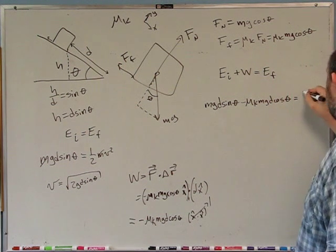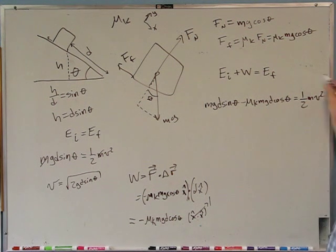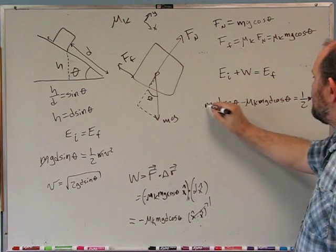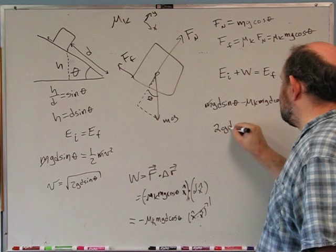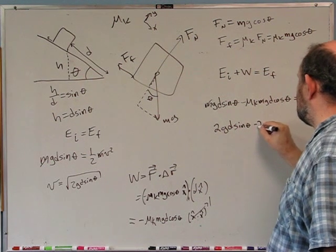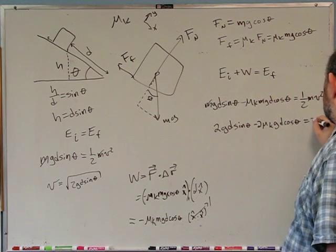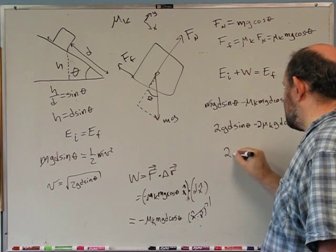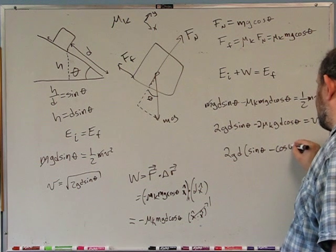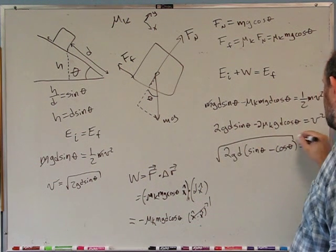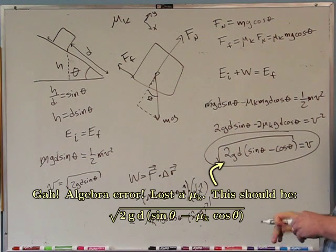Setting EI + W = EF, where EF = ½mv², and dividing by m and multiplying by 2, we get v² = 2gd sinθ − 2μk·gd cosθ = 2gd(sinθ − μk cosθ). Taking the square root gives the speed at the bottom. That's how you solve this with energy conservation.